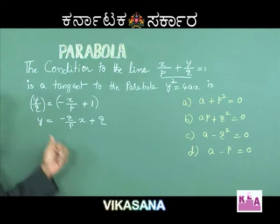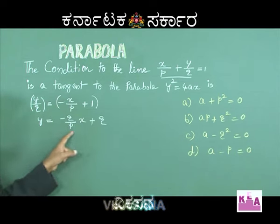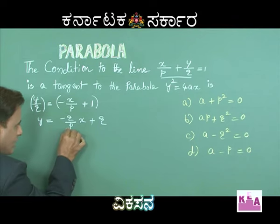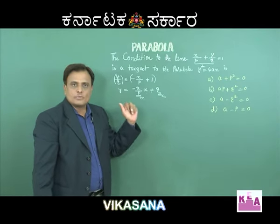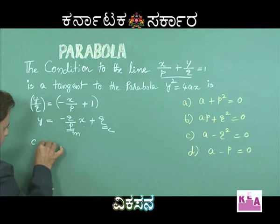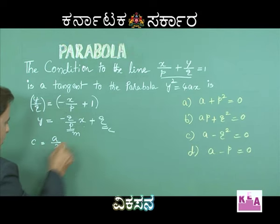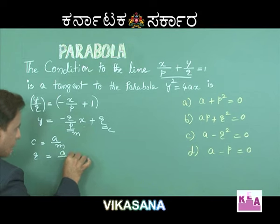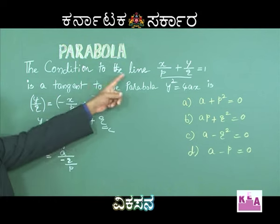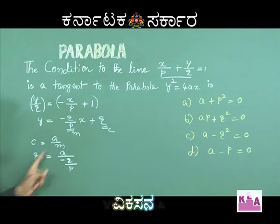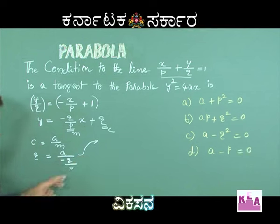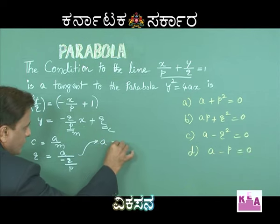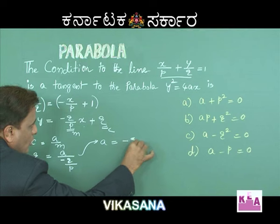The given line is now exactly in the form y = mx + c. The condition is c = a/m. Here c = q and m = -q/p. Applying the tangency condition c = a/m, we have q = a/(-q/p). After cross multiplication, a = -q²/p.